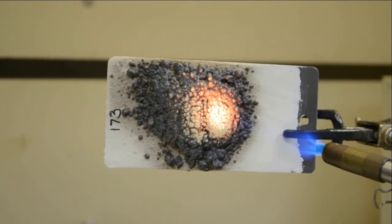As you can see, Flame Control 173 creates a thick layer of char that insulates the substrate from the intense heat.